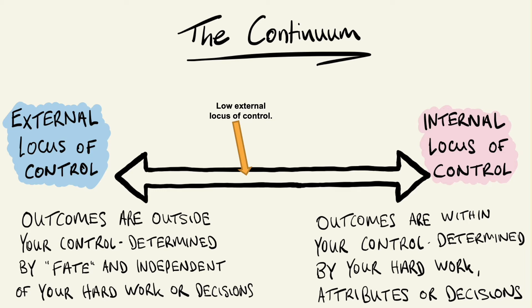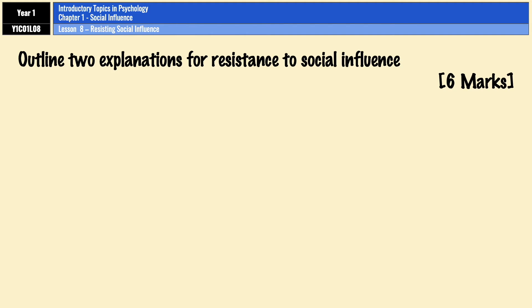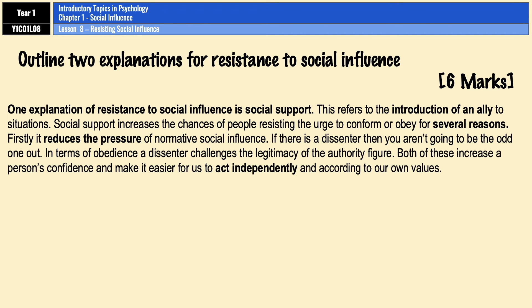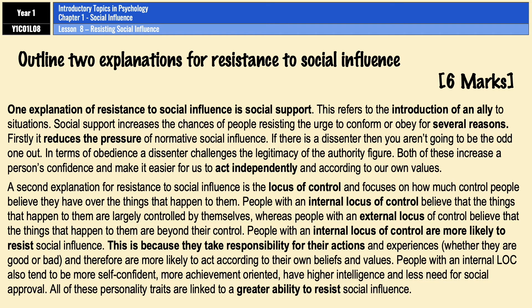Before the evaluation points, here's how this all comes together in a six-mark outline. The first paragraph is an outline of social support — what it is and why it influences resistance, without needing to reference Asch or Milgram. The second, longer paragraph covers the locus of control in more detail because there's more to say. Notice key words like acting independently, reducing pressure, and taking responsibility. This outline is just one example — you can cut or add emphasis, and you could include Asch or Milgram's research too.